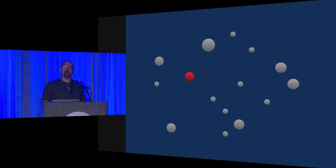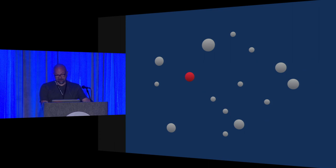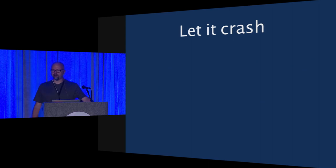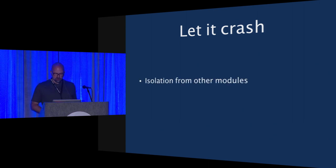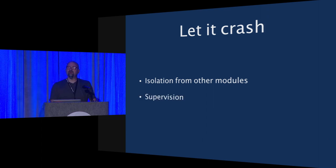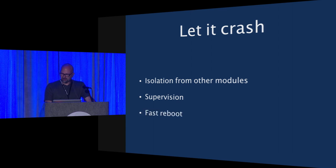If you have Microsoft Word and you're typing along and your spell checker crashes and it immediately reboots, you might not even notice. Crashes don't have to be bad. So if we're going to go with this let-it-crash philosophy, we need isolation — our modules need to be distinct from each other. We need supervision — you can't trust a failing process to reboot itself, you need something outside of it. And we need fast reboot so users and the rest of the application don't notice things have gone wrong.